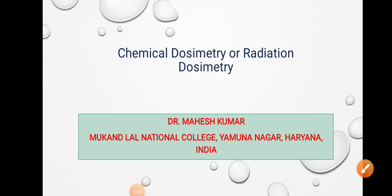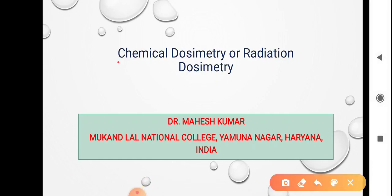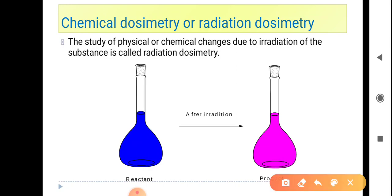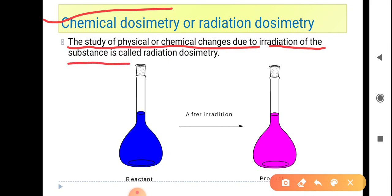Good morning everyone. I am here to discuss the topic of chemical dosimetry or radiation dosimetry. Chemical dosimetry is the study of physical or chemical changes due to radiation of a substance — this is called radiation dosimetry or chemical dosimetry.